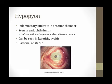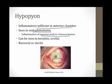The final topic in this module is the hypopyon — an inflammatory infiltrate in the anterior chamber of the eye, as shown on screen. This is commonly seen in endophthalmitis, which is inflammation involving the aqueous or vitreous humor of the eye. It often complicates surgical procedures involving the eye when bacteria get in. A hypopyon can also be seen in keratitis and uveitis and other conditions. It's usually bacterial, but sterile hypopyons also exist.